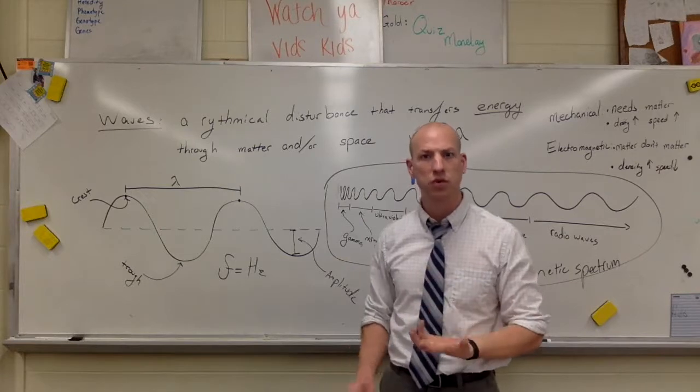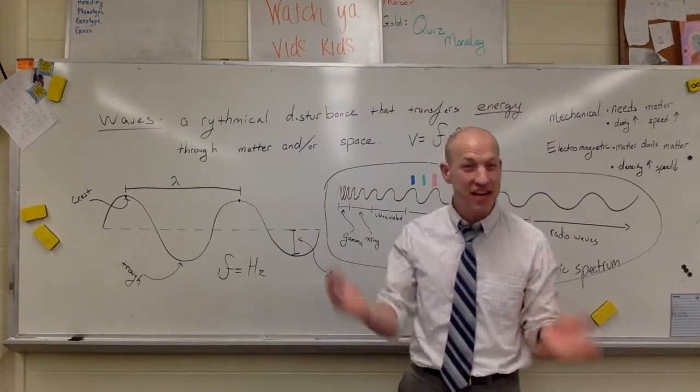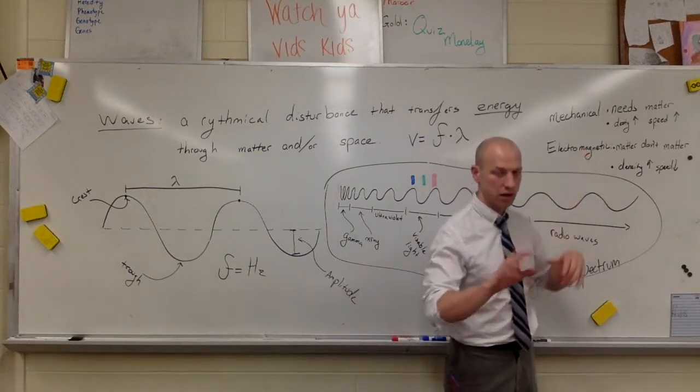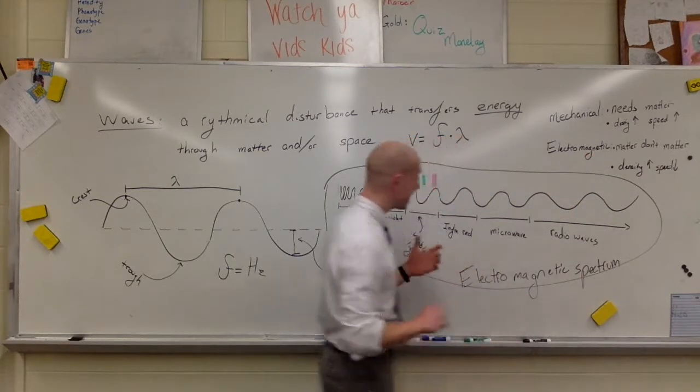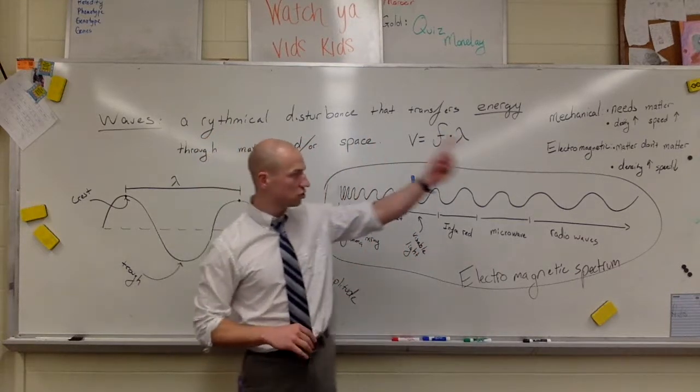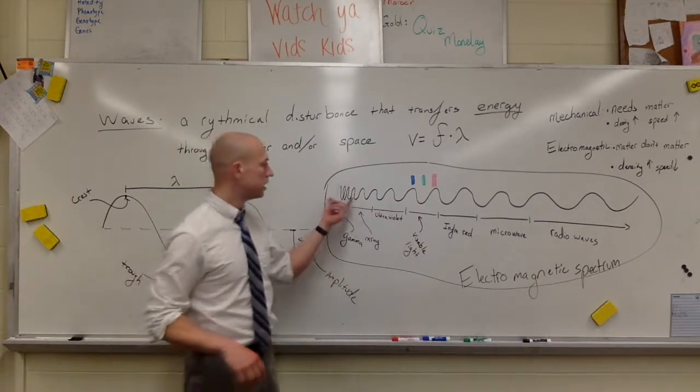You have something thick, it takes longer for them to move through. You have something more dense like water or plastic or glass, that actually changes the speed of those things, and we'll talk about why that's important a little bit later. The last bit that you need to know is about the electromagnetic spectrum. Here I've drawn a circle around all these different waves.